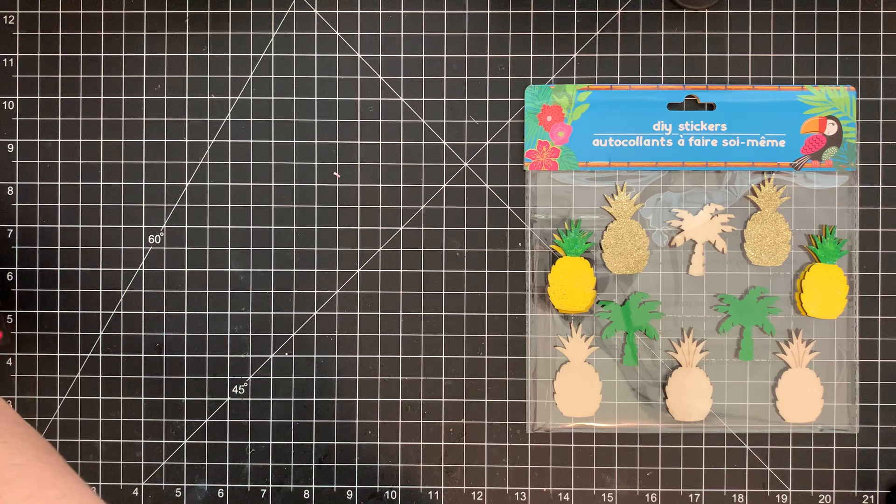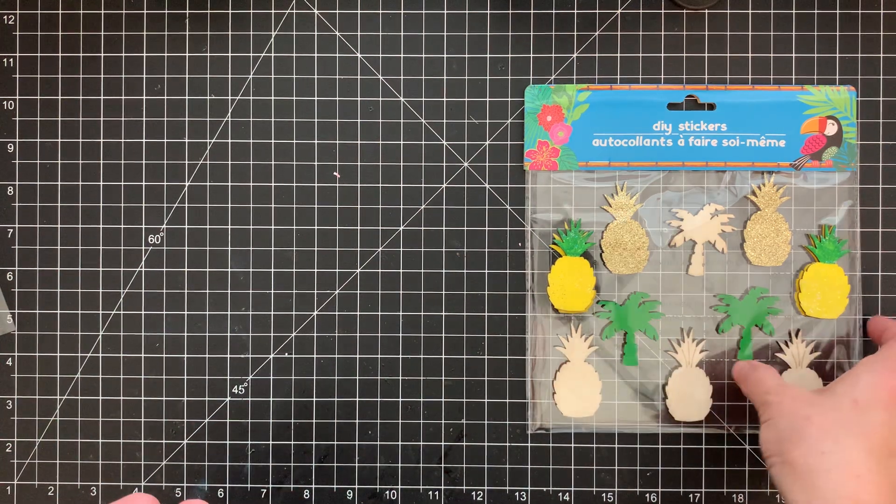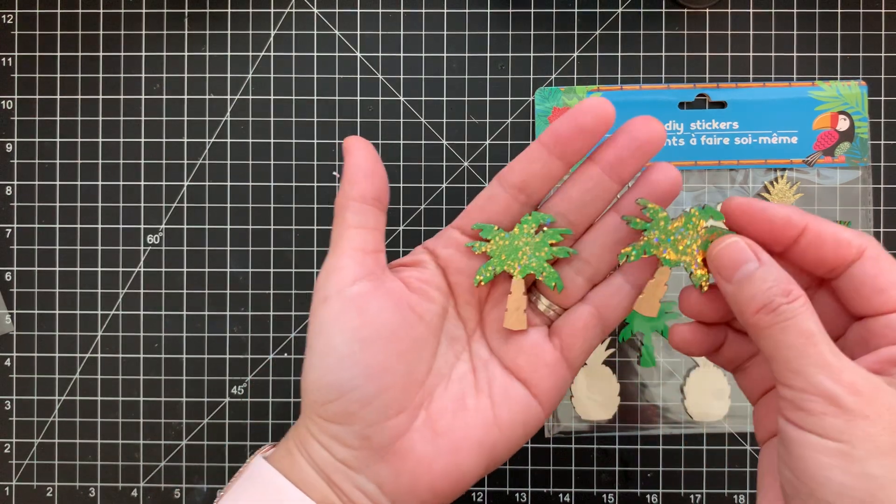And then for the palm tree, that was all green. I didn't like that it was all green. So I went ahead and changed that. And this is what I came up with.